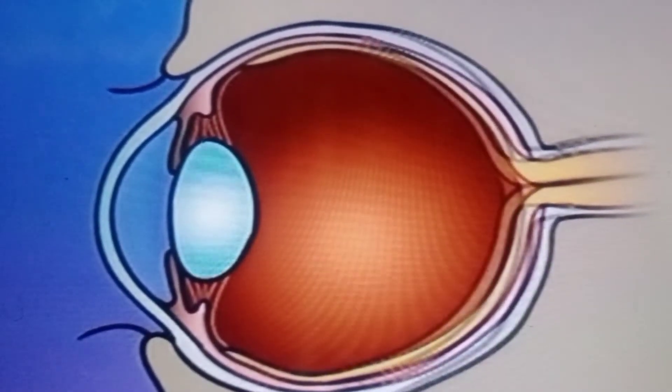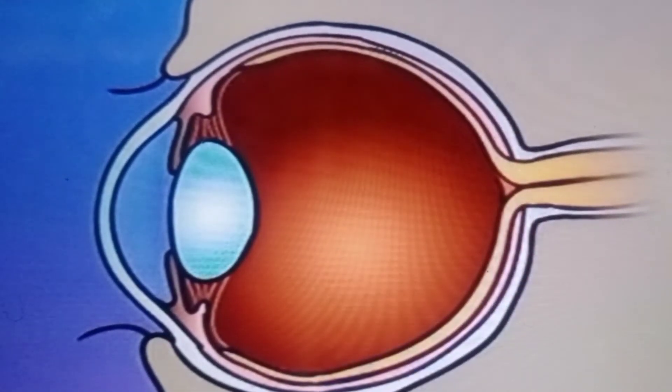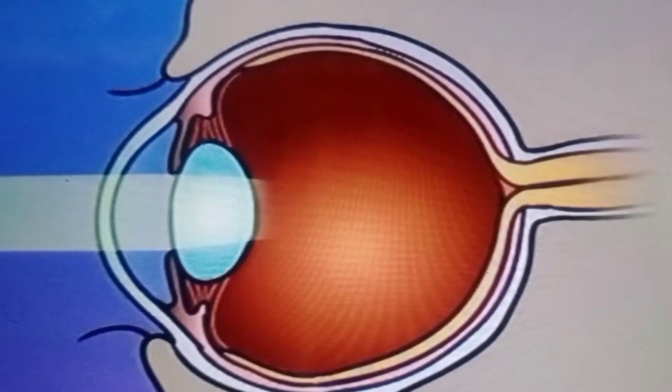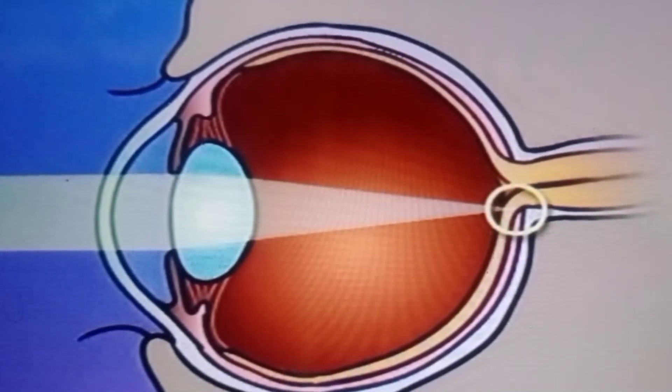Hyperopia, or farsightedness, occurs when the shape of the eye is too short. In this case, light rays are focused on a point behind the retina.